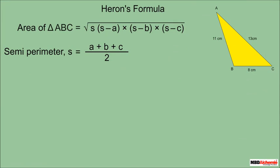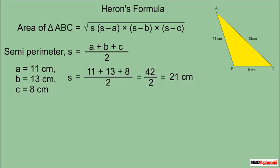Let us apply Heron's formula to calculate the area of Neil's triangle. First, we find the semi-perimeter: S = (11 + 13 + 8) / 2, which equals 21 cm.